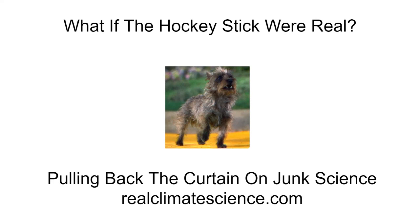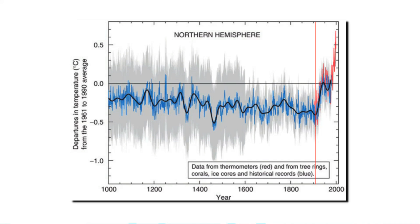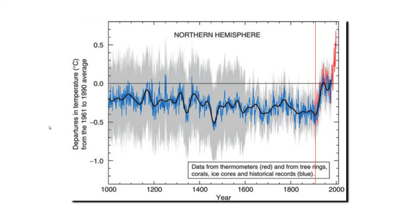Hello, this is Tony Heller from realclimatescience.com. Mark Twain said if you tell the truth you don't have to remember anything. For this video I'm going to pretend that Michael Mann's wildly fraudulent hockey stick graph is an accurate representation of the past thousand years of Earth's history, and I'm going to show how this graph creates all kinds of contradictions for its proponents.